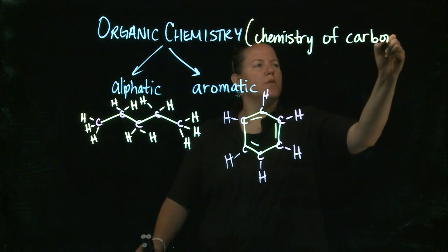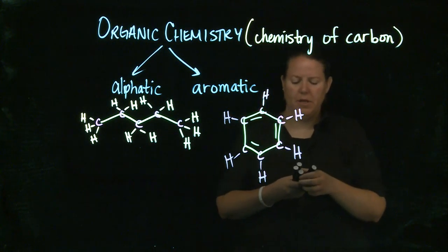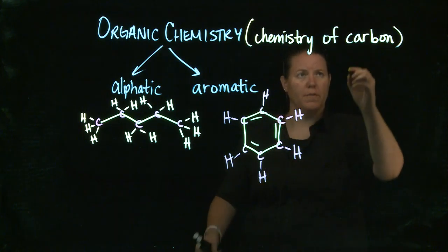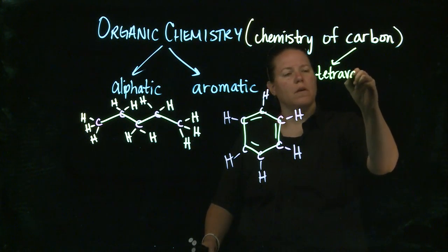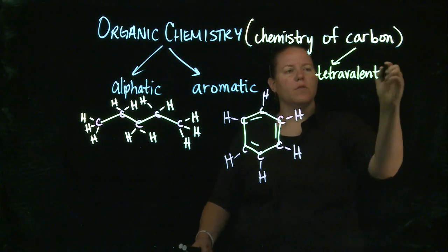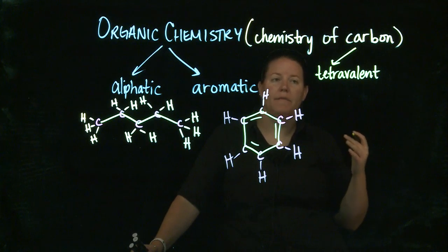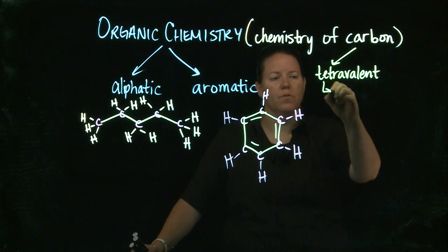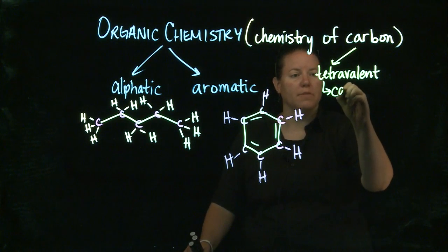Why is carbon so particularly special? The reason why it's particularly special is because carbon has two things going for it. It is tetravalent. Tetravalent literally means that it has four valence electrons. But what that often translates to, for the rest of us, is that indeed it means that carbon makes four bonds around it.